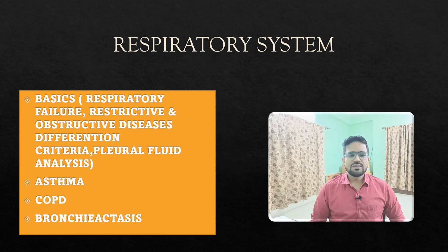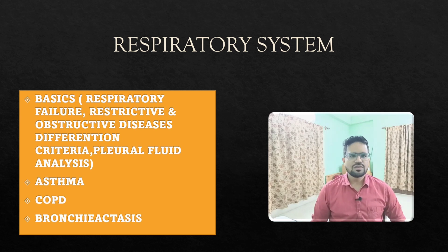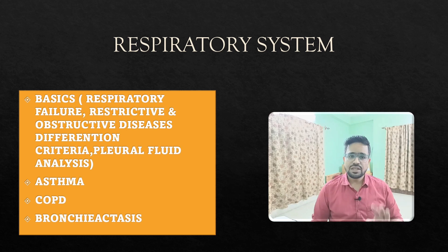For the respiratory system, first read the basic part: types of respiratory failure and how to differentiate restrictive from obstructive diseases. Pleural fluid analysis is a favorite topic and must be read. Asthma is asked every year — two to three questions — on management, risk factors, and clinical features, so read everything about asthma. COPD and bronchiectasis are also important — mainly X-ray features, CT scan features, and clinical questions are asked from asthma, COPD, and bronchiectasis. Read respiratory basics before diving into specific diseases.